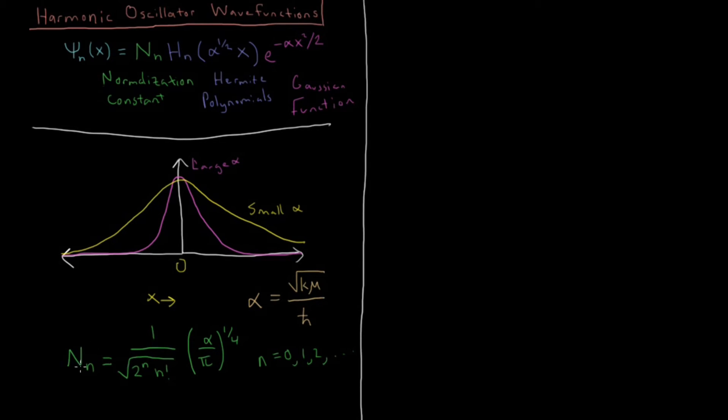In particle in a box, our normalization constant didn't depend on the integer n, it was square root of 2 over l for all solutions. This is not the case anymore, and you're going to have to be careful to make sure to pick your correct normalization constant, given which solution for the harmonic oscillator wave function you have.